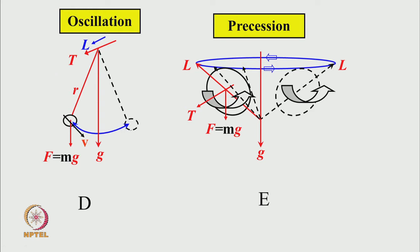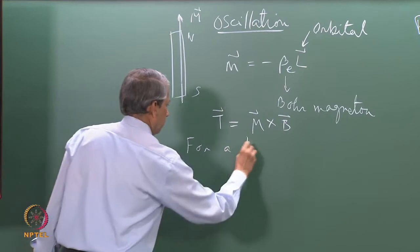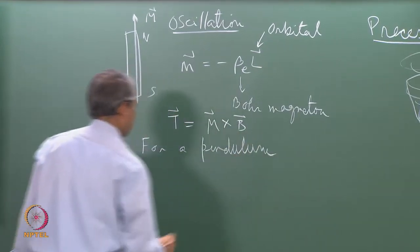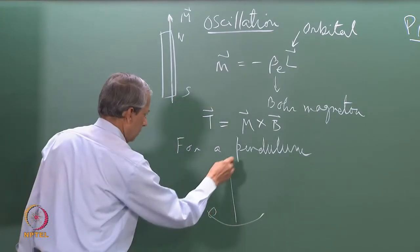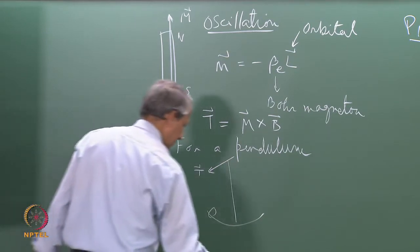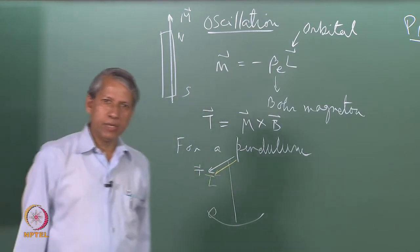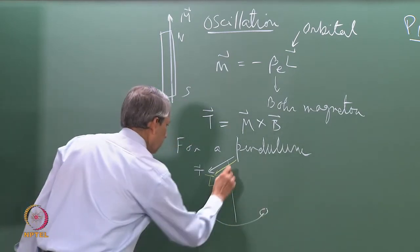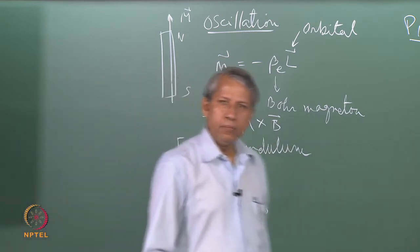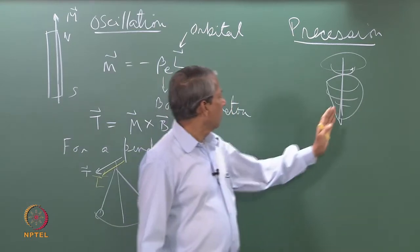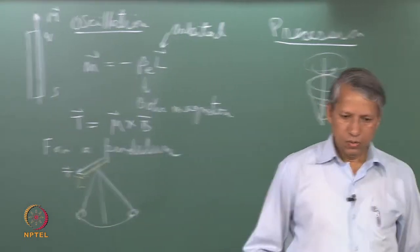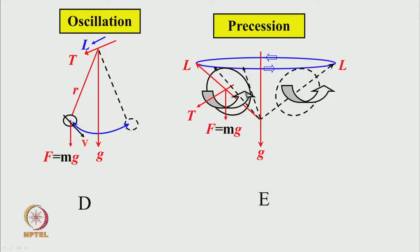So for a pendulum, the torque and the angular momentum L point in the same direction. This is not the same when a top is spinning around its axis. To understand that, let us look at this picture. This spherical ball is a simplified version of a top, and it is spinning around this axis given by the vector L, which is also the direction of the angular momentum.